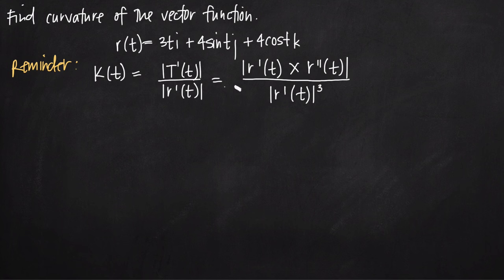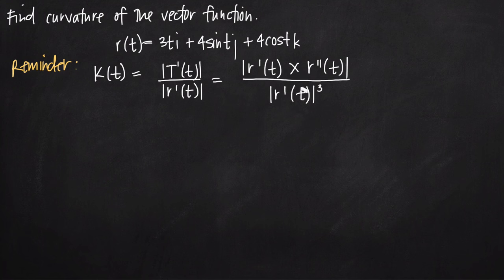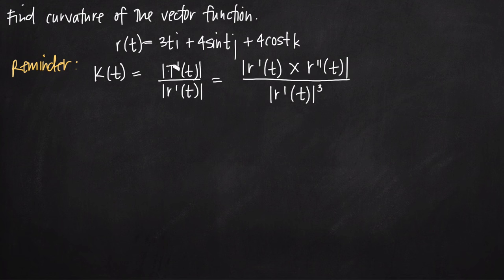The formula for curvature uses r'(t) and the second derivative r''(t). We take the cross product of those two, find the magnitude of the result, and divide that by the cube of the magnitude of r'(t). If you've already found the unit tangent vector, you can use the simpler formula: take the derivative of the unit tangent vector and find its magnitude. But if you're starting from the beginning, we'll use the cross product formula and break it down into pieces.